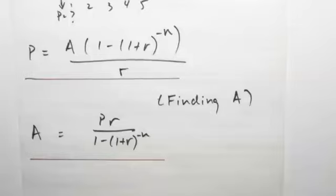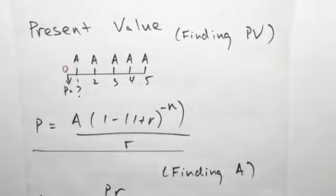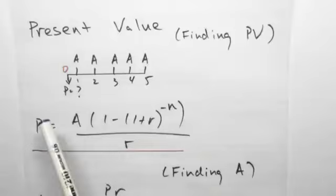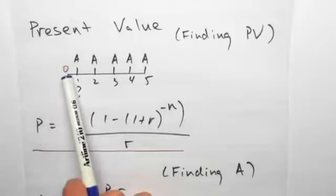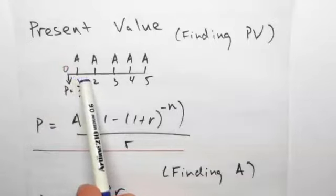And one thing to note with working out present value of an annuity is the first annuity payment is always one period from present time. So if this is time 0, the first annuity payment is always at time 1.